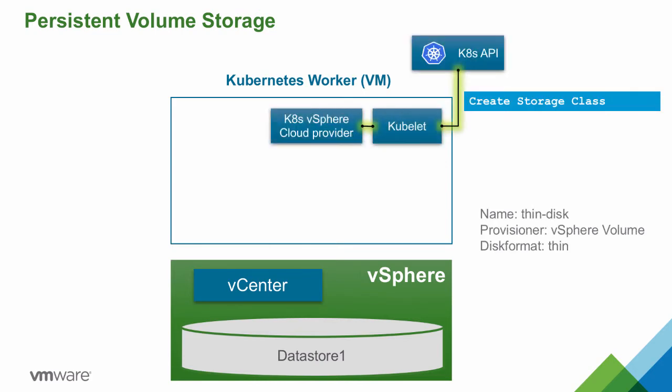The Kubernetes cluster administrator can define a set of storage classes that map to the type of storage required. For example, the disk format might be thin, or it could be thick or eager zeroed thick, or a specific data store might be required. If the vSphere storage policies have been configured, the storage policy name can be referenced here as well.